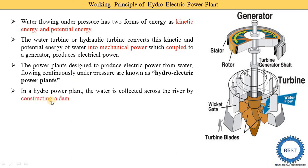In a hydropower plant, the water is collected across the rivers by constructing a dam. In a river, water comes due to rain. On the flow of the river, we construct a dam, and the flow of water is stored in that dam.